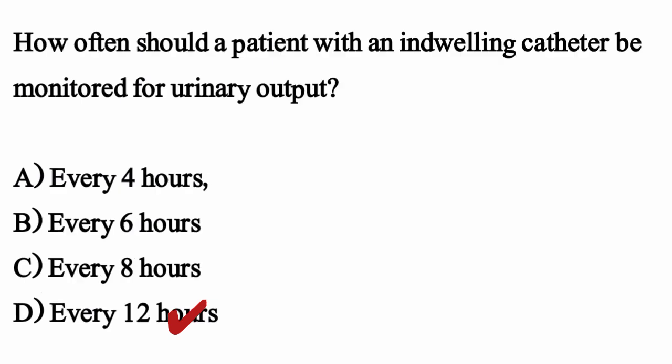How often should a patient with an indwelling catheter be monitored for urinary output? The correct option is Option A: Every 4 hours.